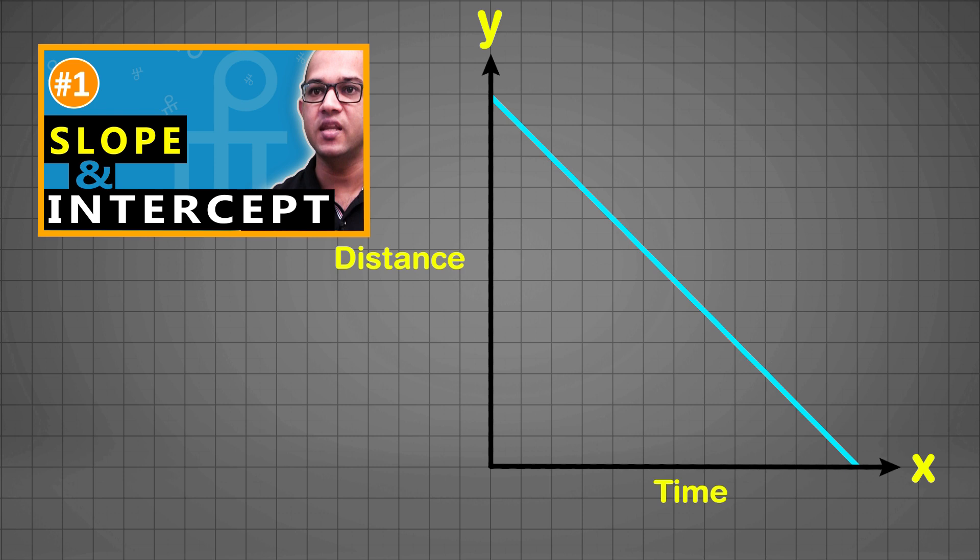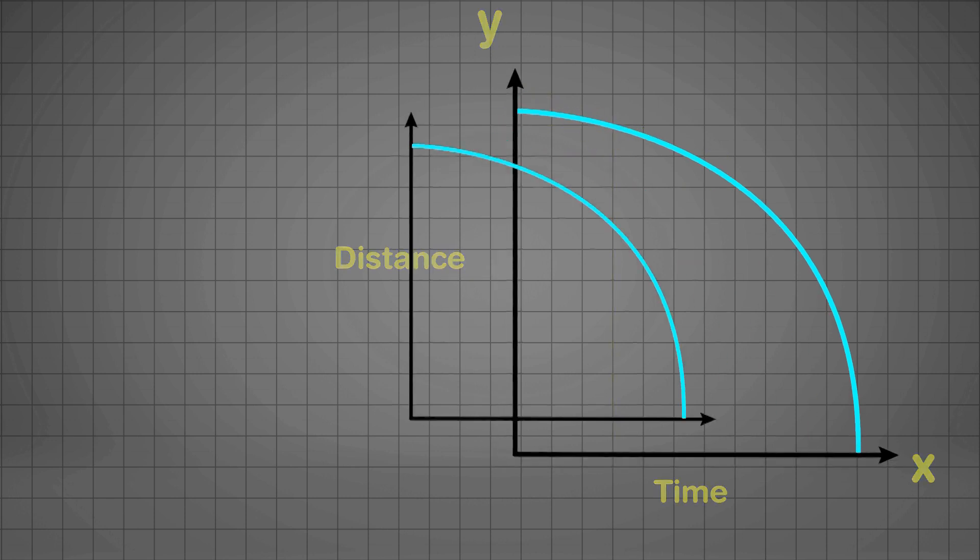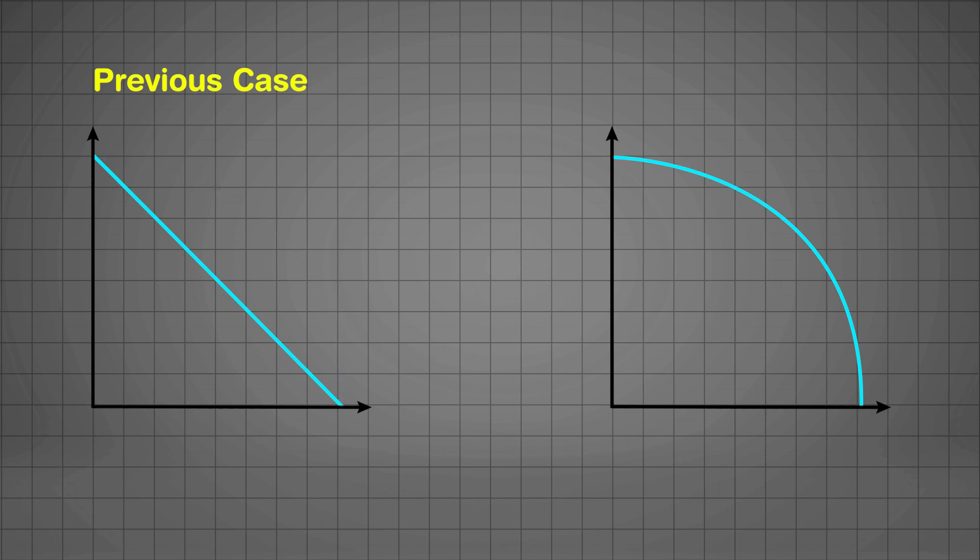Now let's get back to our original case where the distance versus time variation is a curve instead of a straight line. This is the case where the apple is changing its speed continuously and hence the curvature or slope changes likewise. Now the task is to measure the speed at any moment of time during the fall. That means we need to find the slope of the curve at that moment. But how will I do it? We don't have a right triangle like we had in the previous case, which is very much needed to find slope. All the mystery lies here.